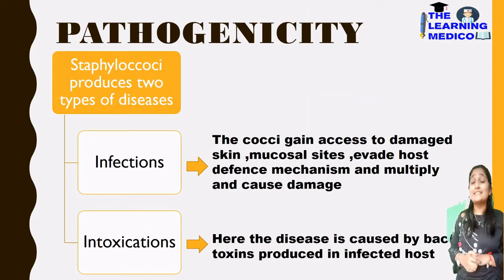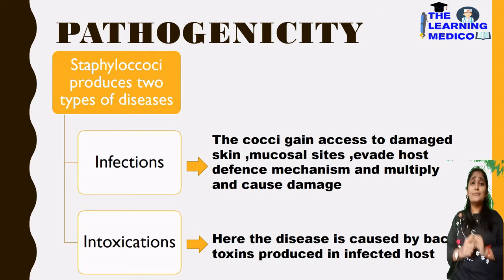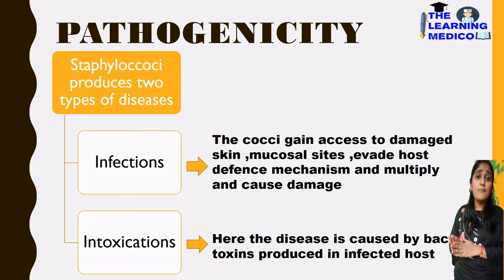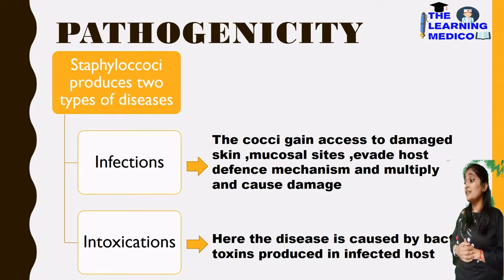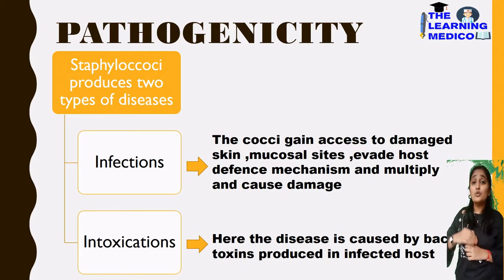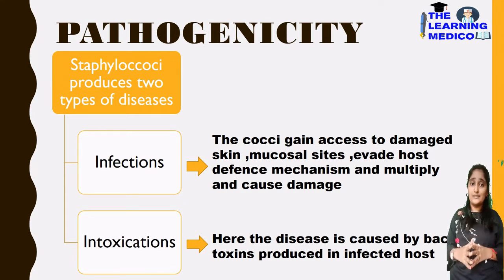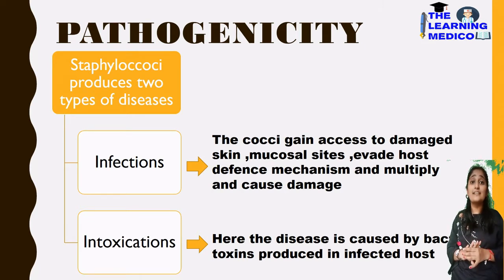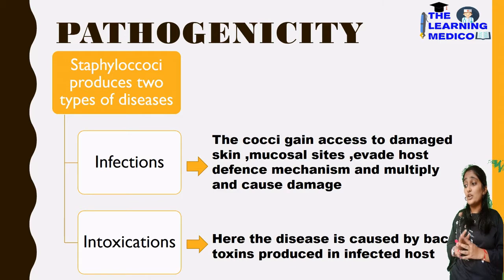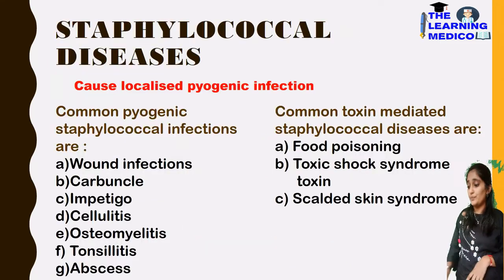Pathogenicity: Staphylococcus aureus causes two types of diseases — infections and intoxications. In infections, the cocci directly damage the skin or mucosal sites. The toxins also contribute to causing infection and disease.